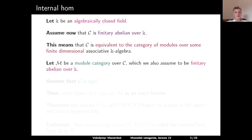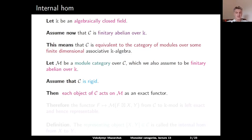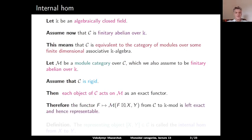Let M be a finitary abelian module category over C. Assume that the category C is rigid — in particular, each object has both left and right adjoints. Then each object of C acts on M as an exact functor. Therefore, the functor which sends F to the morphism set in M from F acting on X to Y is left exact and hence representable.